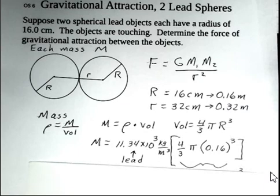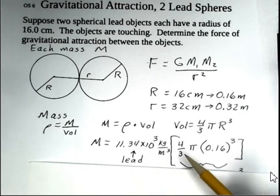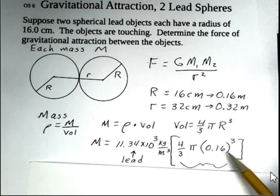So we put in some numbers here. I've looked up the density of lead, 11.34 times 10 to the third kilograms per cubic meter. Then the calculation for the volume, four-thirds pi, and 0.16 cubed.